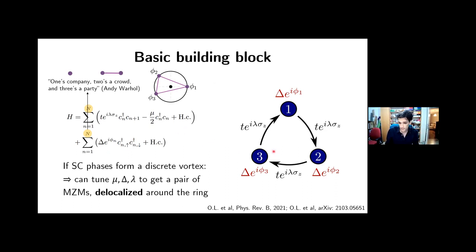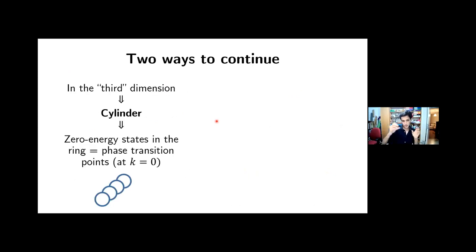But it's actually a very important point. So these Majorana zero modes are going to have weights on all three sites, not necessarily equal weights, but they are most definitely not spatially separated. So that means that we're not done. There's still some work to do. And there are two ways that we could think of to continue to make this into an actual device. So the first one is to take many copies of these rings, and we're going to couple them in the third dimension, so we're going to couple them outside of the plane. So we're putting them together into the form of a cylinder. And then what we're going to find is that the zero energy states that we found in the ring are now going to become phase transition points in the cylinder at k equals zero.